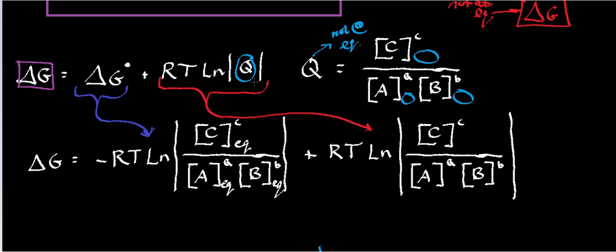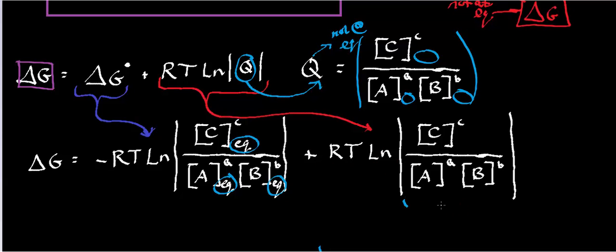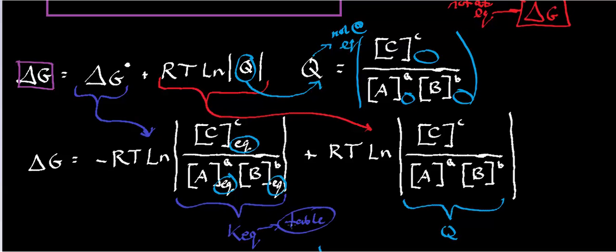Plugging in the expression for Q gives the full delta G not at equilibrium: delta G standard (which is negative RT ln KEQ) plus RT ln Q, where Q is the product of non-equilibrium concentrations of products over reactants to their respective powers. The equilibrium constant can often be looked up in a table, while the reaction quotient must be calculated from the actual concentrations of C, A, and B.